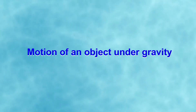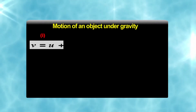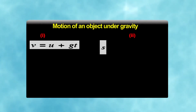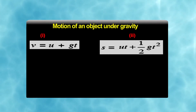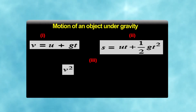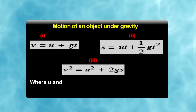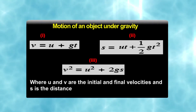The average value of g on and near the surface of the earth is taken as 9.8 m/s². The equations of motion under gravity are: V = U + gt; S = Ut + ½gt²; V² = U² + 2gS, where U and V are initial and final velocities and S is the distance covered in time t.